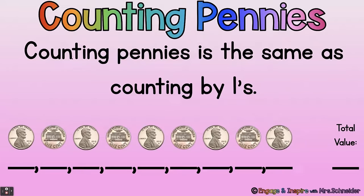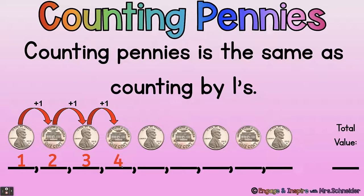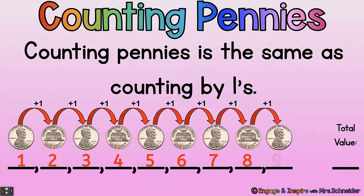Counting pennies. Counting pennies is the same as counting by ones. So you go one, and then you're adding one more: one plus one is two, three, four, five, six, seven, eight, nine. So here we have nine pennies and they're worth one cent each, so we have nine cents. The total value of these pennies is nine cents.